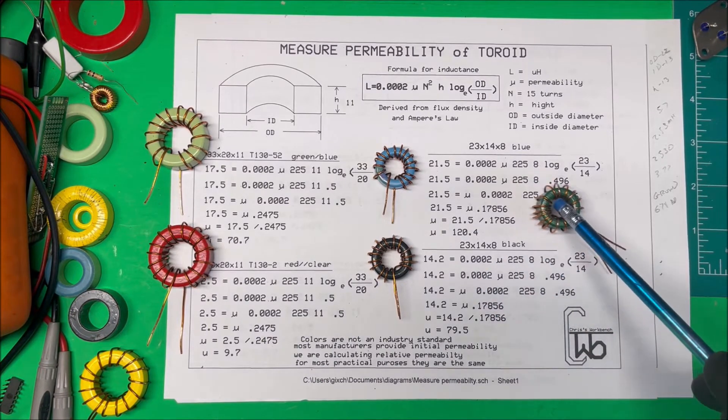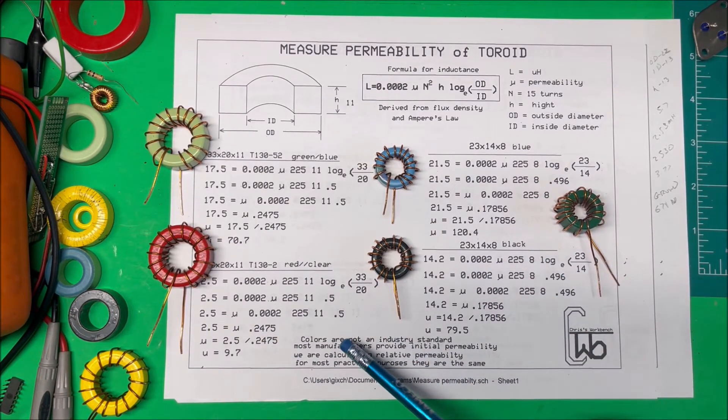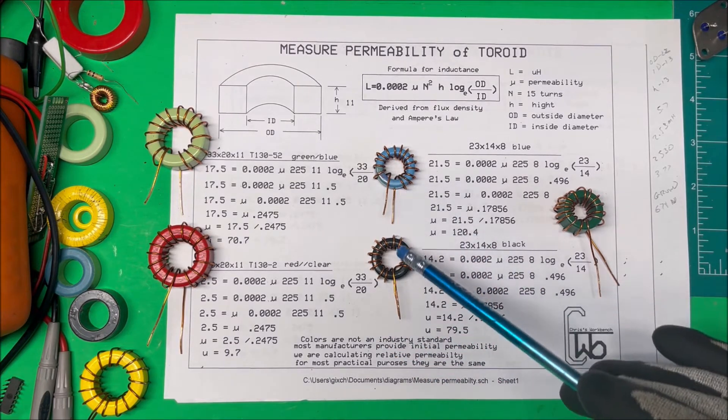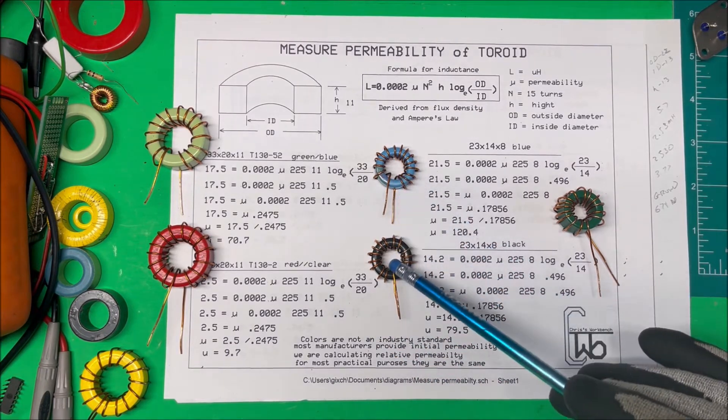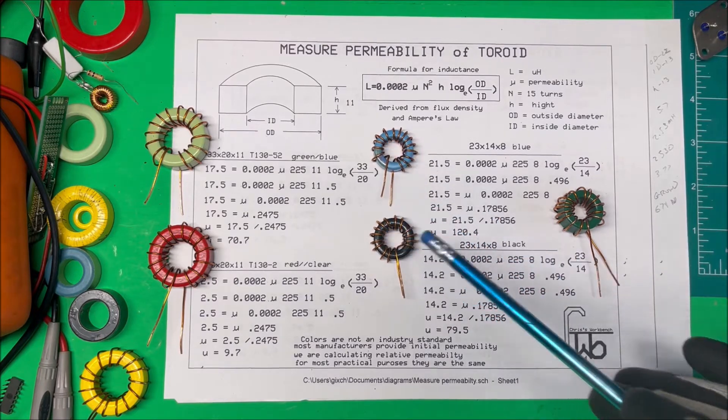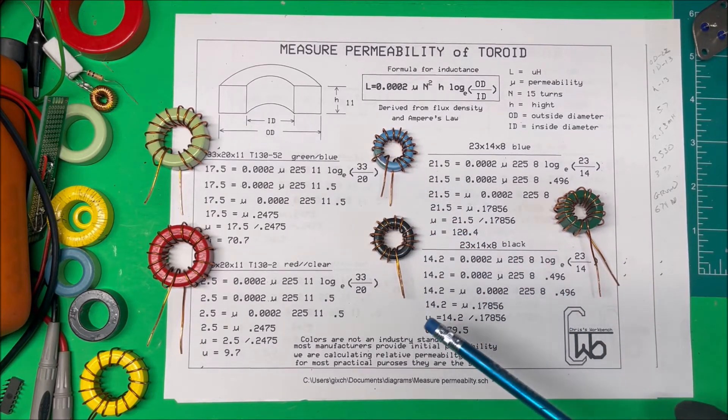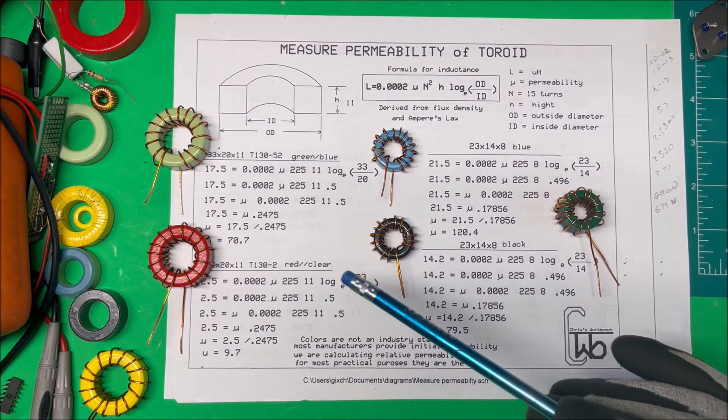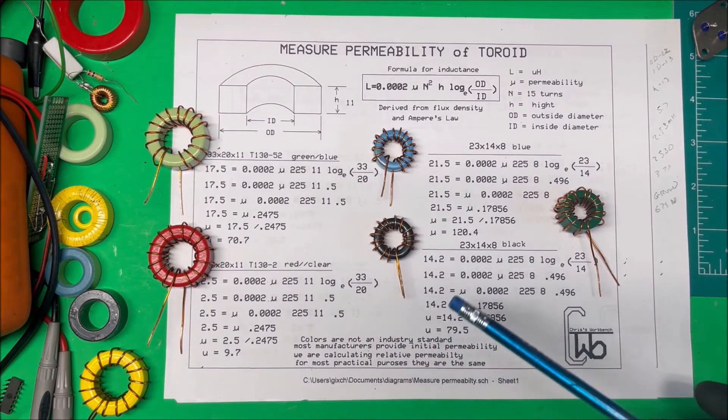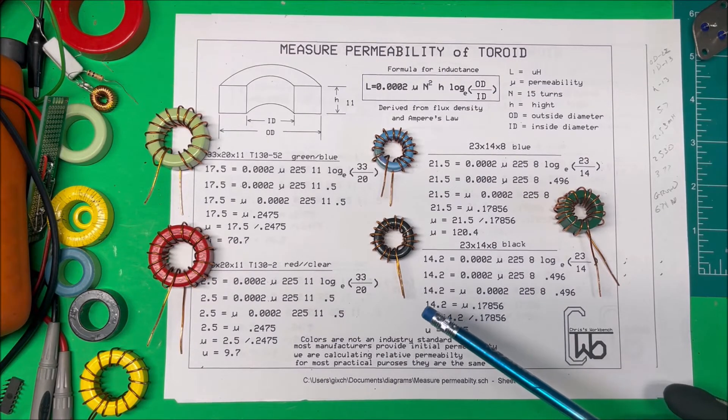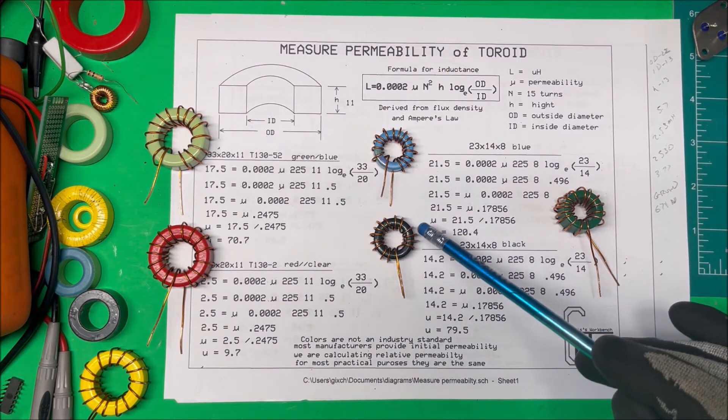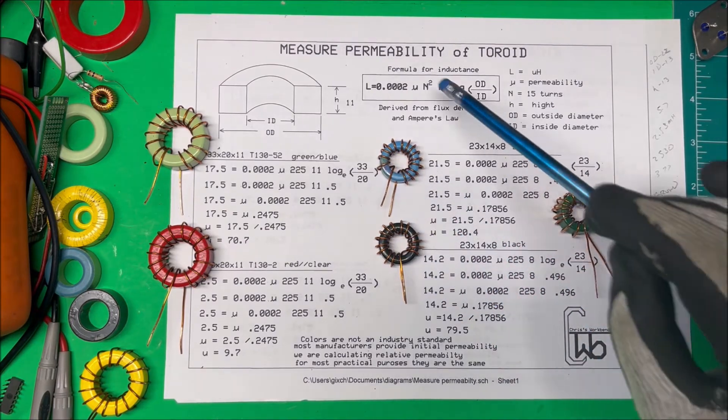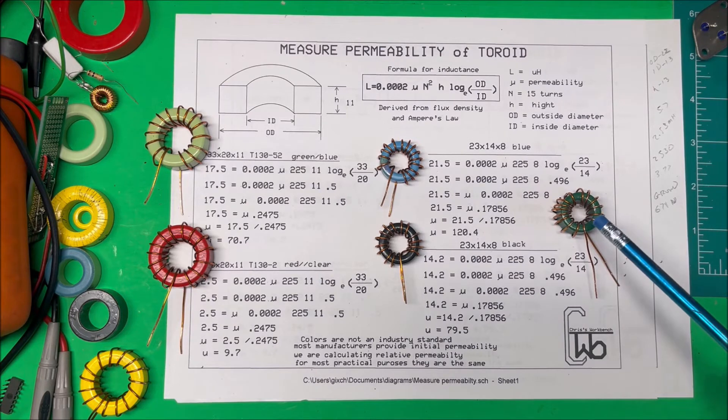Now sometimes the colors, they're not really an industry standard. Some of them are, but you can't really rely too much on the colors there. We're calculating relative permeability, and a lot of the manufacturers will provide initial permeability. For us, that's going to be close enough, so we can use the permeability here to calculate what our inductance is going to be by how many turns we want to put on the core.